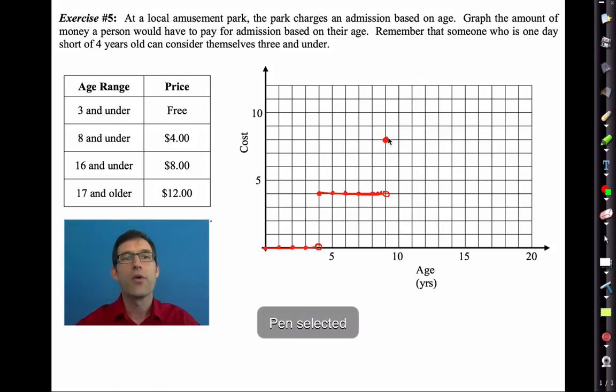So let's keep graphing. So as soon as you're nine that's when you go up to eight bucks and 10 you're at eight, 11 you're at eight, 12 you're at eight, 13, 14, 15, 16 all the way up to 17 but not right at 17.